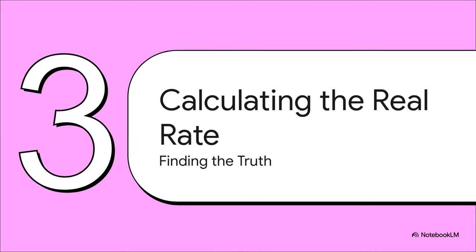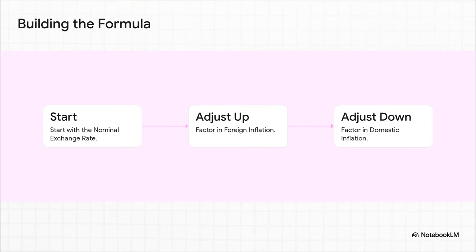All right, with this info, we can finally calculate what's called the real exchange rate. This is where we get a much clearer picture, because it takes into account how prices actually changed in both places. Now, the logic for this is actually pretty simple when you break it down. You start with that basic nominal rate we saw earlier. Then you adjust it for the price changes in the foreign country. And then you adjust it again for the price changes right here at home.